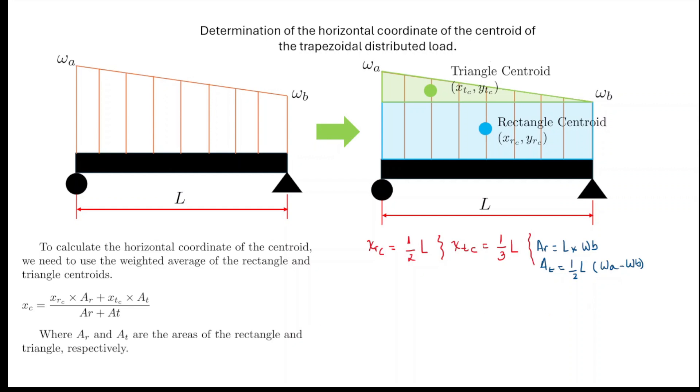Now we have all the components to use the weighted average formula to determine the horizontal coordinate of the centroid. So let's do this. Here I'm going to call it XC. We're going to substitute, so it's going to be centroid of the rectangle L/2 times the area L times WB plus L/3 times the area L/2 of WA minus WB.